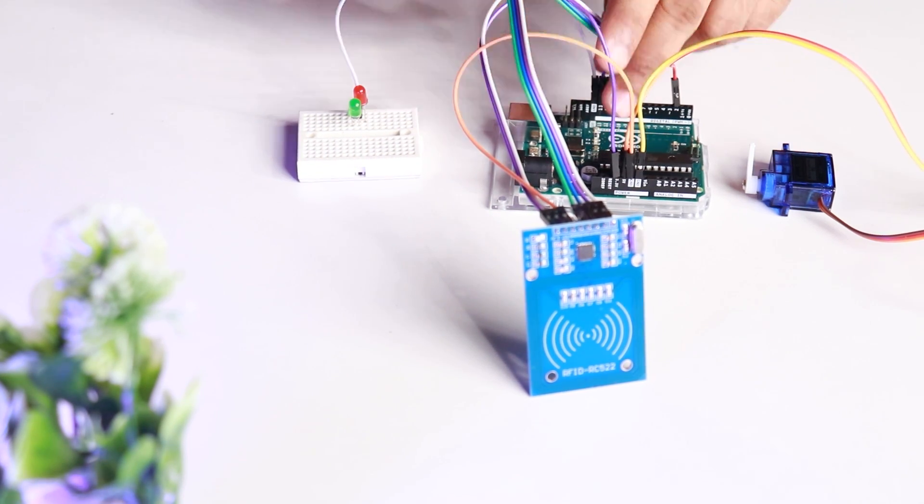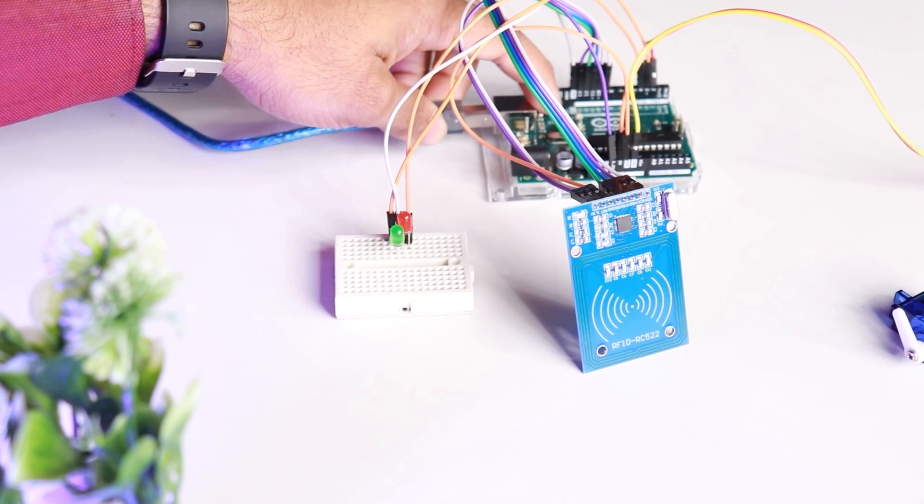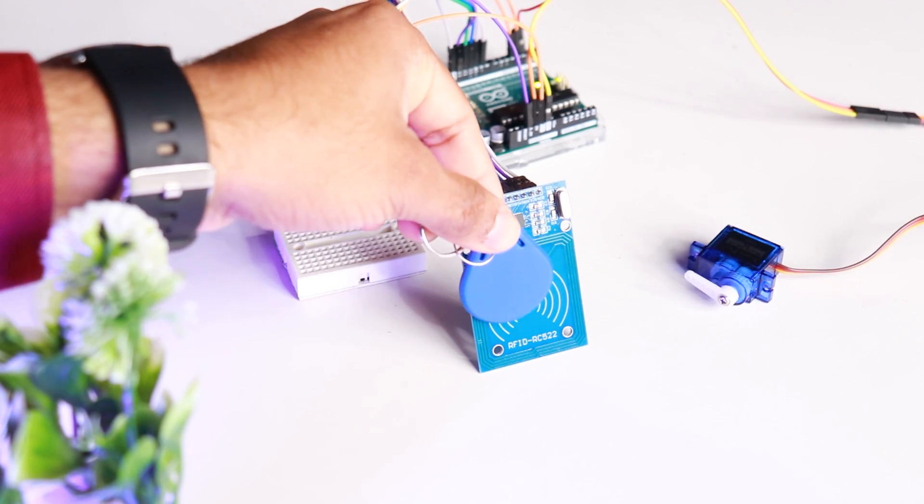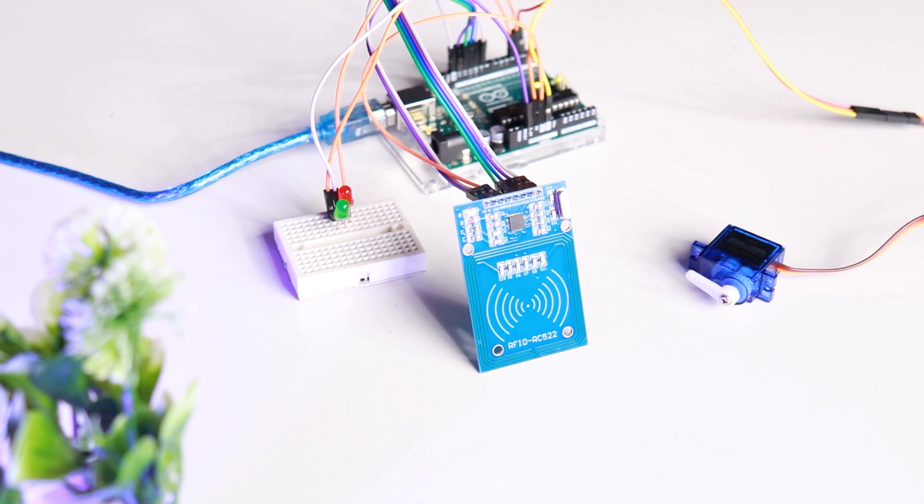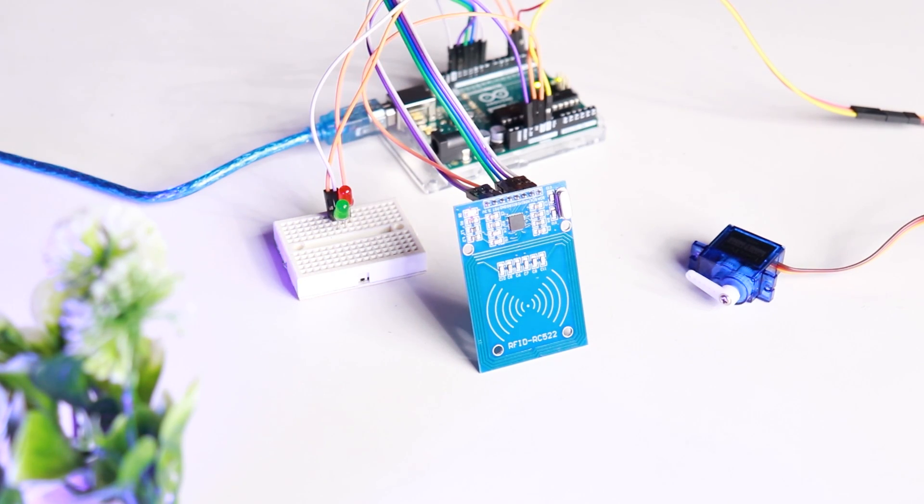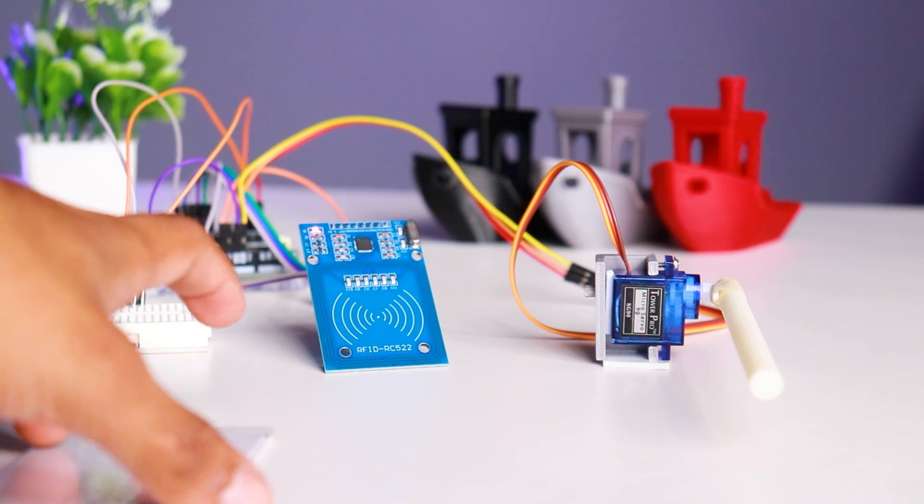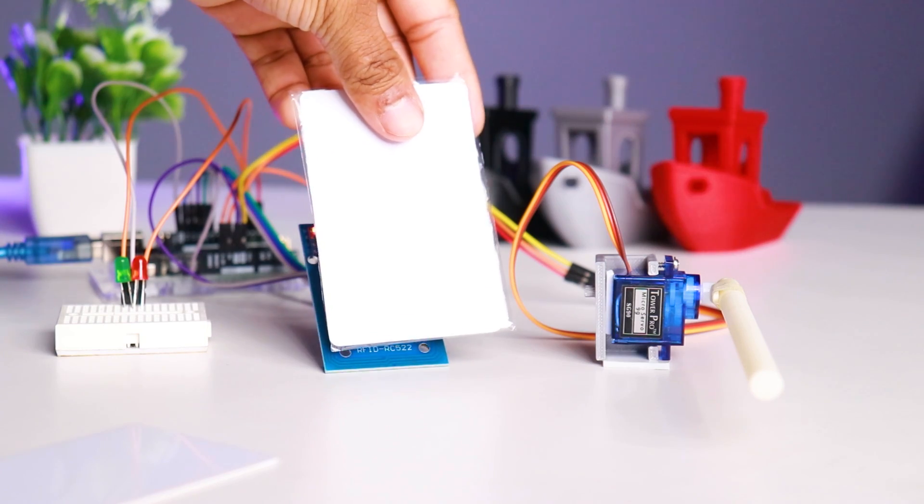Code is ready and connections are done. Connect the Arduino to PC and upload the code. Place the tag near the reader, and we can see that access is granted to known tags, activated with green LED. But if an unknown tag or card is placed on the reader, it denies the access and turns on the red LED.